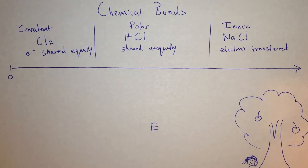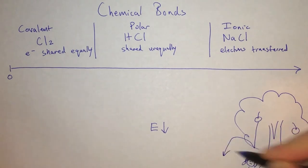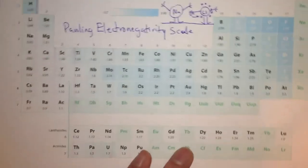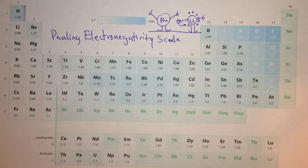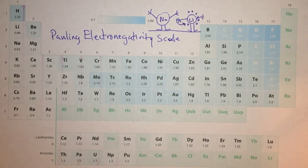This happens because the compounds, when they bond, try to reduce their energy — just like an apple falls off Newton's head in order to reduce its gravitational potential energy. We categorize these compounds by their electronegativity.